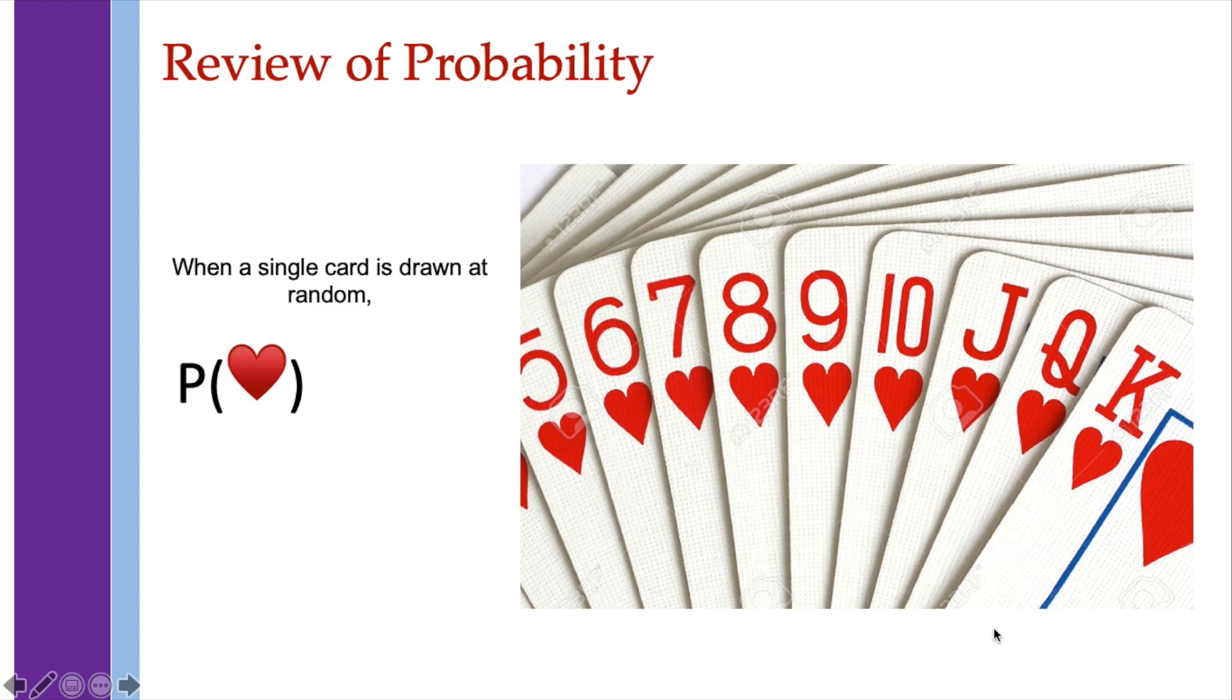Suppose that a single card is drawn at random. So what is the probability of getting a heart? We know that since there are 13 cards out of the 52 possible cards, then the probability of getting a heart is 13 over 52. You may express that as 1 over 4.